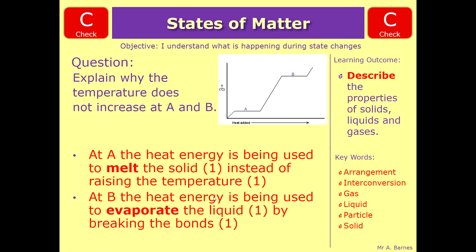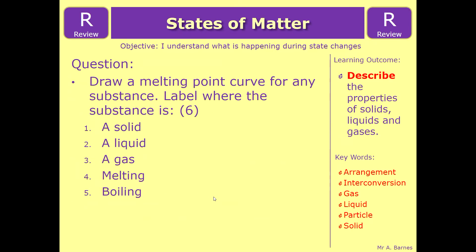Okay, hopefully the state of matter graphs should be fairly straightforward to you now. If they are, you shouldn't have any problem with this review section, which is to draw a melting point curve for any substance, and then label where the substance is A, a solid, B, a liquid, C, a gas, D, melting, and E, boiling. Thank you very much.